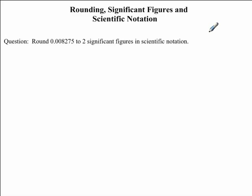In this mini-clip, we will be discussing rounding, significant figures, and scientific notation. We will be discussing these topics by answering this question here. It asks us to round 0.008275 to two significant figures in scientific notation.